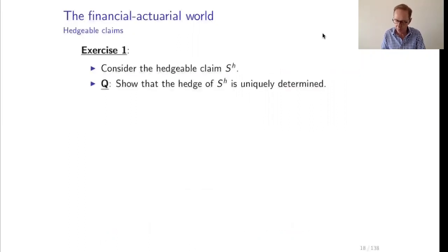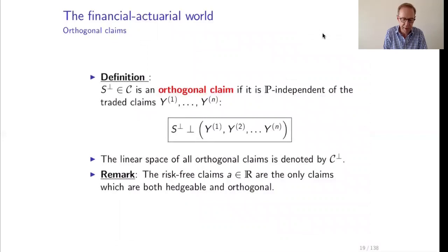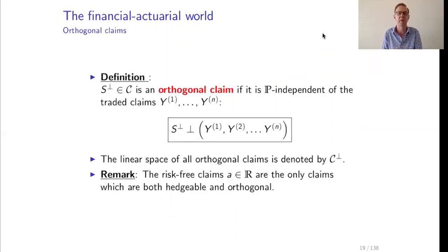In an insurance context we will also need other kinds of claims. The first one we define is an orthogonal claim. In some sense an orthogonal claim is the opposite of a hedgeable claim. We say that the claim is orthogonal if it is P-independent of the traded claims Y_1 to Y_N. That means the claim is independent of any financial information available at time one, which is exactly Y_1 to Y_N.